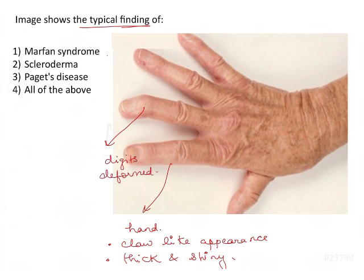So what are the options? Marfan syndrome, Scleroderma, Paget's disease, and all of the above.